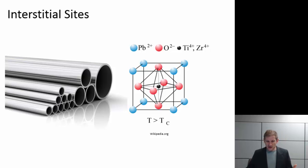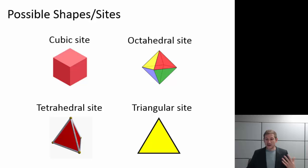So the first thing that I need to think about when I'm talking about interstitial sites is what are the possible shapes or sites that I should think about? And there are four basic ones I want you to know.